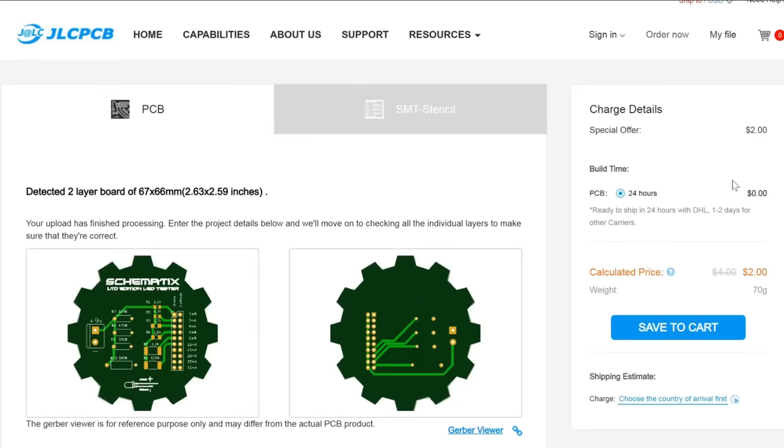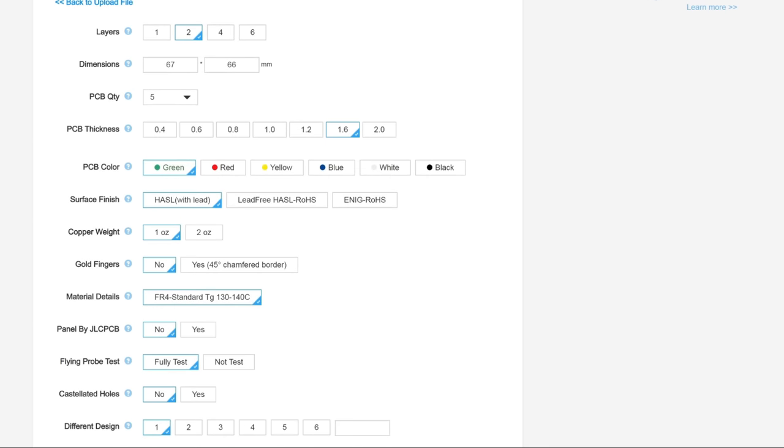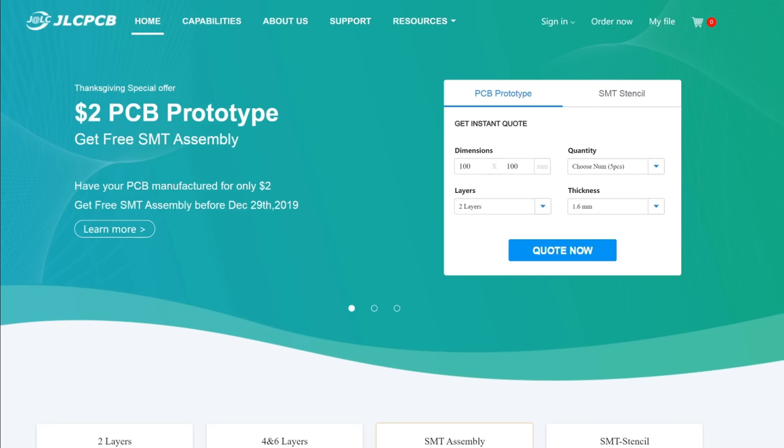Have you ever found yourself situated in a paddock full of cows and need to order circuit boards? Yeah me neither, but if I did I would use this video's sponsor JLCPCB. Five circuit boards cost as little as $2.